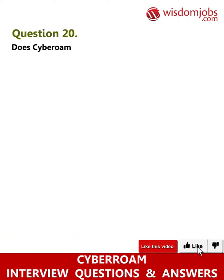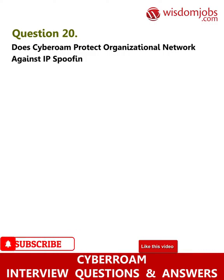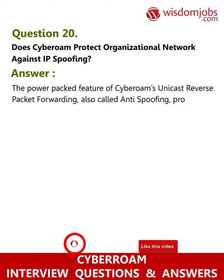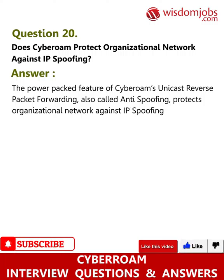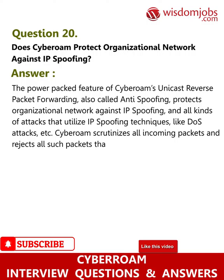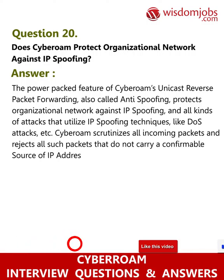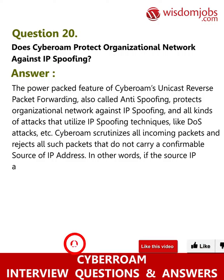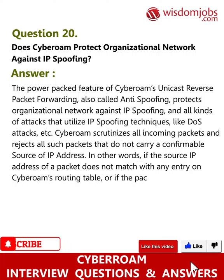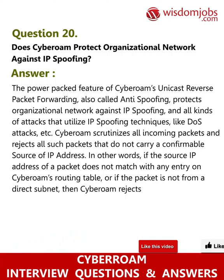Question 20: Does CyberRoam protect organizational networks against IP spoofing? The feature Unicast Reverse Packet Forwarding, also called anti-spoofing, protects the organizational network against IP spoofing and all kinds of attacks that utilize IP spoofing techniques like DoS attacks. CyberRoam scrutinizes all incoming packets and rejects those that do not carry a confirmable source IP address. If the source IP does not match any entry on CyberRoam's routing table or is not from a direct subnet, the packet is rejected.